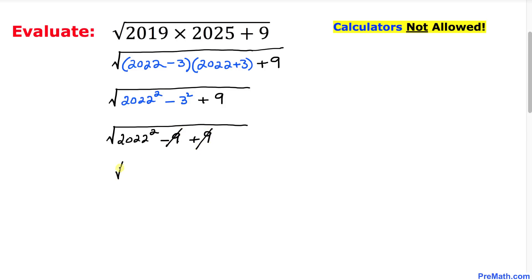So we simply ended up with the square root of 2022 squared. Now we can see that this square and square root, they undo each other, so we got simply 2022, and that's our answer.